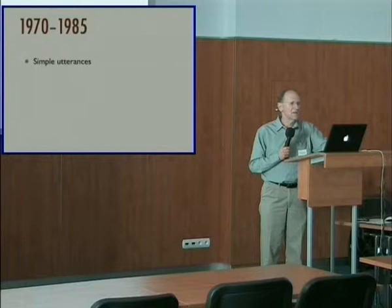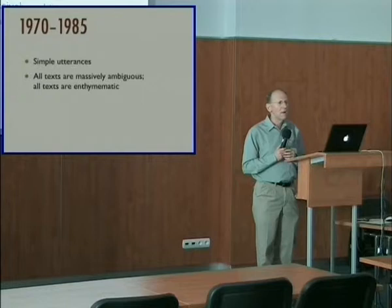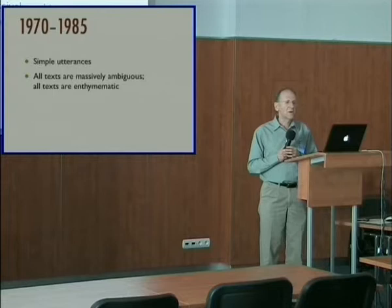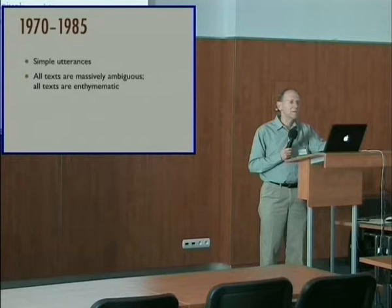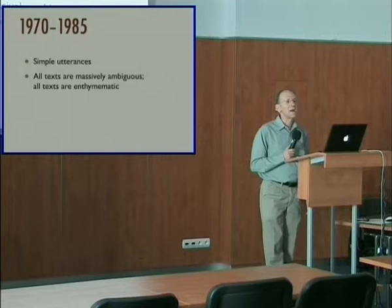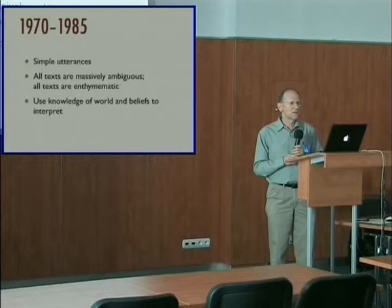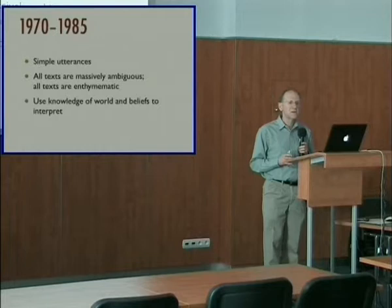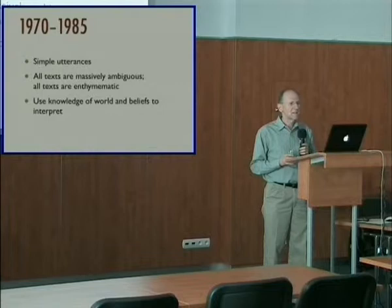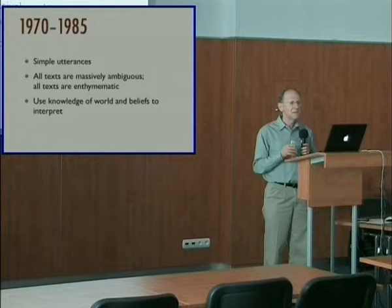What CL took as its central problem was ambiguity. Computational linguistics noted, quite correctly, that even simple texts — even single sentences — can be massively ambiguous. Computers have to resolve these ambiguities in order to understand the text. All texts are enthymematic, in the sense that not everything is explicit, so computers have to make lots of inferences. CL also observed, again correctly, that the way people seem to do this is to use their immense knowledge of the world, seemingly effortlessly. So what computational linguistics had to do was develop methods to represent and employ this knowledge of the world.